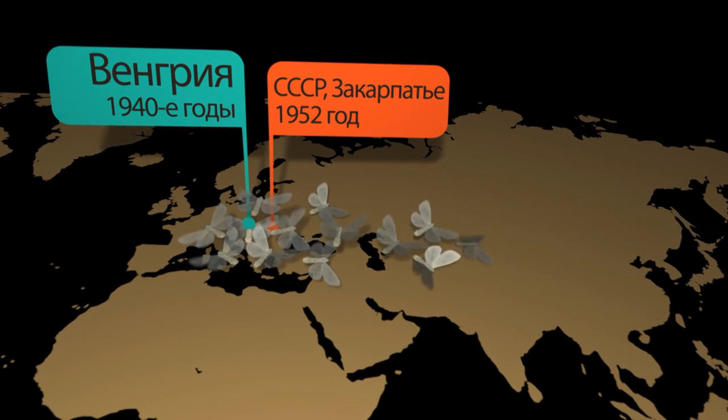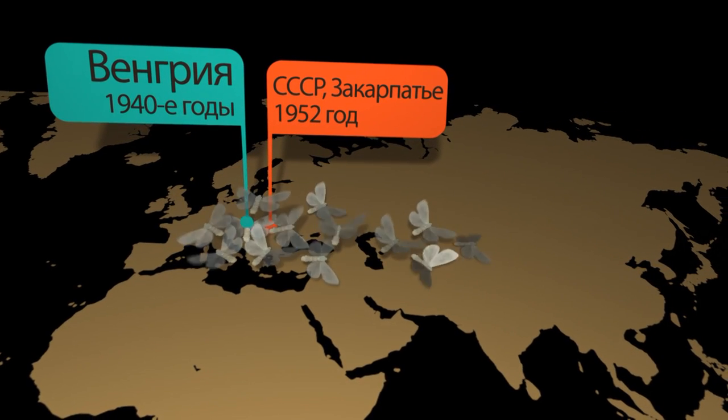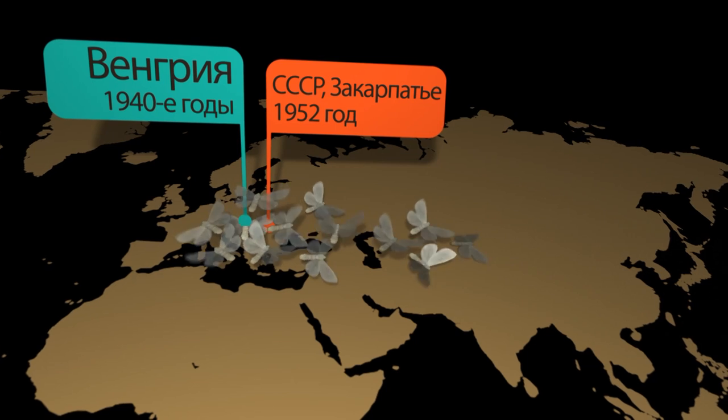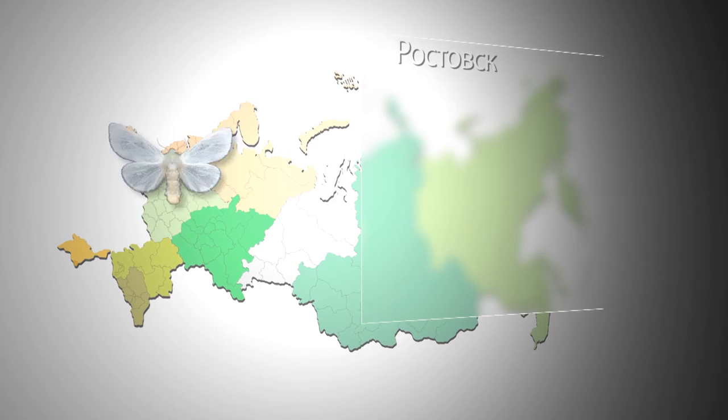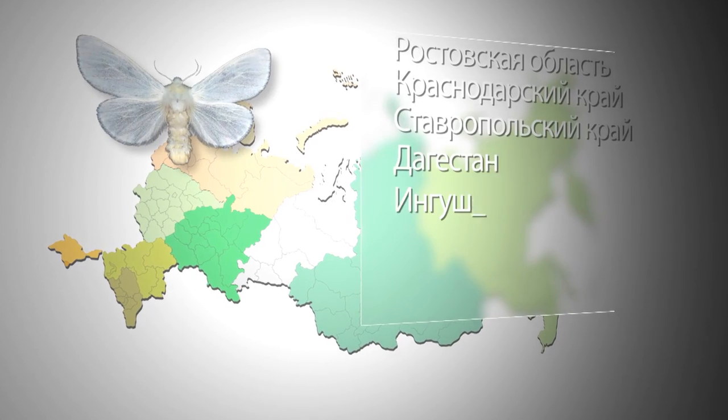С того времени вредитель активно продвигался в южном и юго-восточном направлении. В настоящее время он распространился на значительной территории юга России: это территория предкавказского региона, Ростовской области и Краснодарского края.